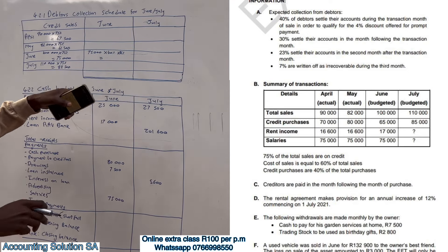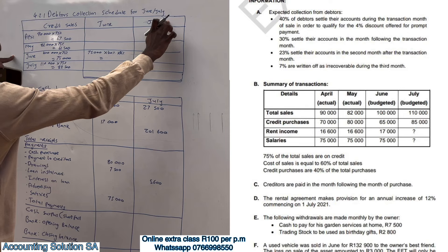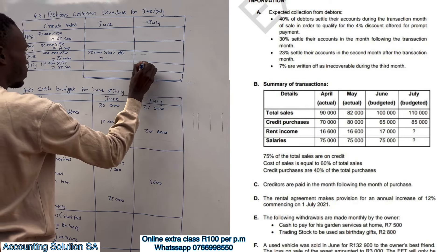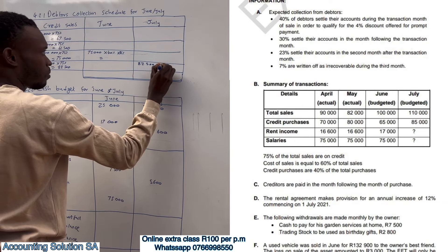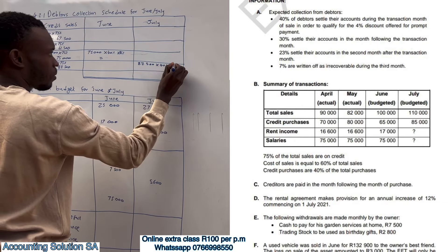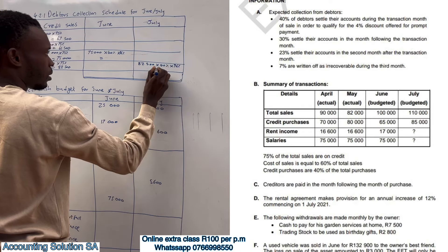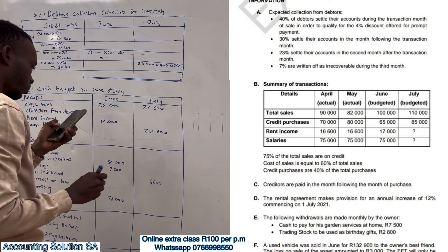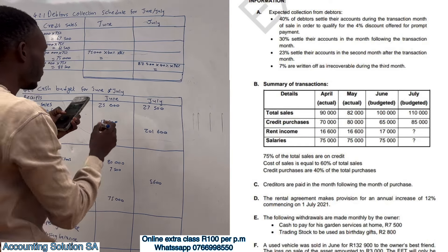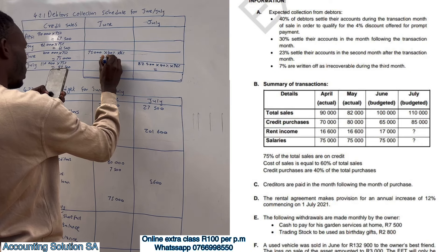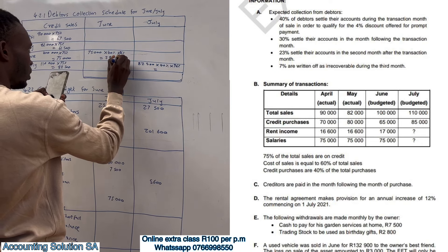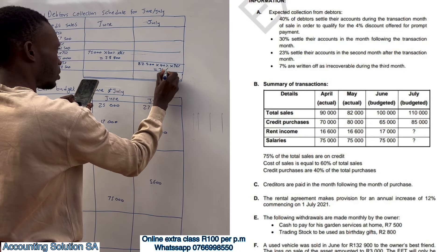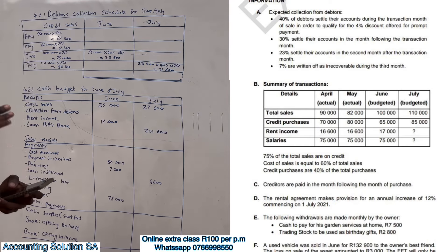For July same-month collection: 82,500 multiplied by 40% multiplied by 96%. Now let's calculate the amounts. June same-month gives 28,800 and July same-month gives 31,680.